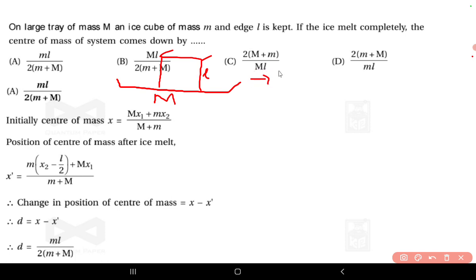So what will be the change in the center of mass? That we have to find. So when ice melts, what will happen? As the tray is very large, all the ice will melt down and convert into water.